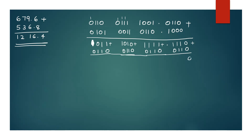0 plus 0 is 0. 1 plus 1 is 0 with carry 1. What is the answer? 1 with carry 1. 1 plus 1 is 0 with carry 1. This carry propagates. You can add the carry forward.